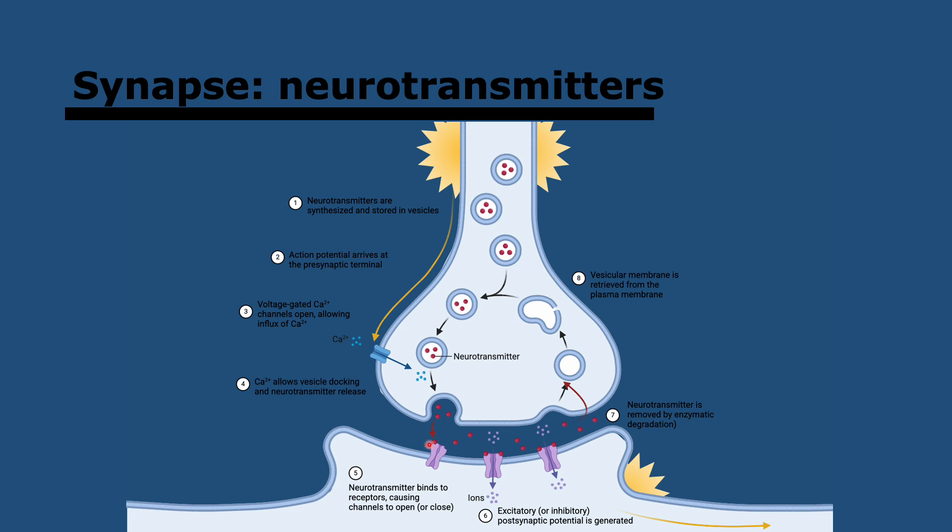These neurotransmitters can then bind to receptors in the postsynaptic membrane, and that causes ion channels to open. Actually, some of these receptors are ion channels themselves. So then ions are going to diffuse into the postsynaptic neuron through the concentration gradient. And that's going to cause the membrane potential to change in the postsynaptic neuron. And if that's strong enough, it's going to trigger an action potential. Finally, neurotransmitters are then broken down and removed quickly back into the presynaptic neuron to make sure that this signal doesn't go on forever.